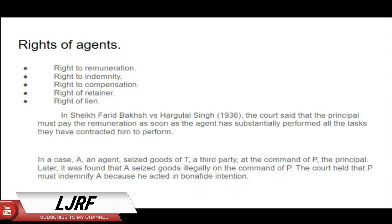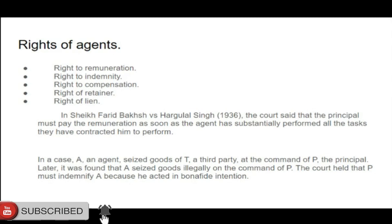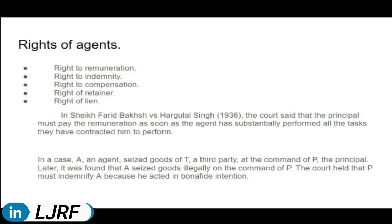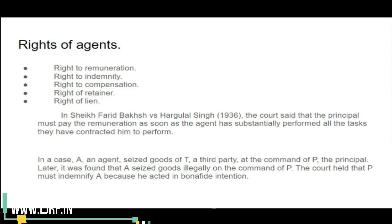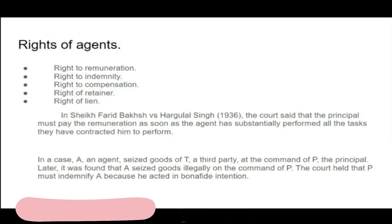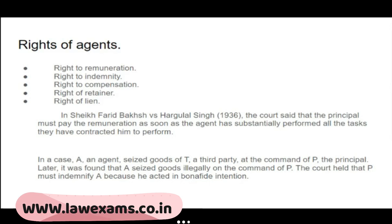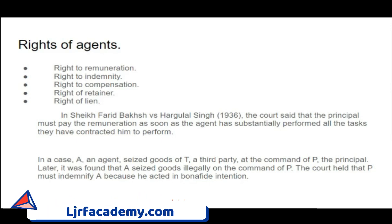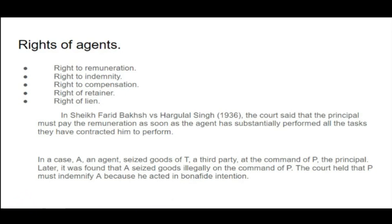Contract of agency — we know who the parties are. When we say rights of an agent, as we already discussed, rights of the bailee mean they are the duties of the bailor. Similarly, rights of a guarantee or surety will somehow be one of the duties of the debtor. They are all correlates. When we say rights of an agent, they are the duties of the principal. And one more party is the third party — how these things reflect before a third party is also important.